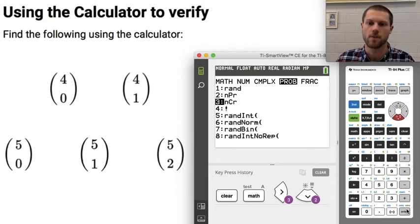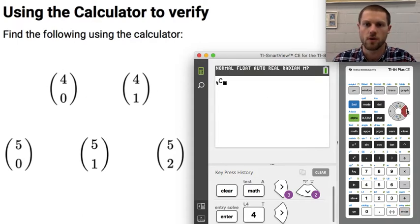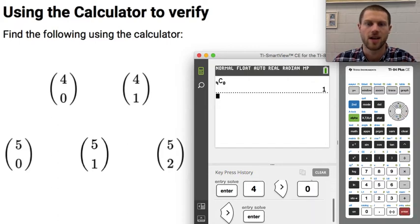And I want to choose the option that looks like NCR. That stands for N choose R. So when I hit enter, this is convenient because it gives me the boxes to fill in the numbers. And remember that the N is on top and the 0 is on bottom when I write it in this vertical form. So I would type 4 in the first box and 0 in the second box and hit enter and I get 1.